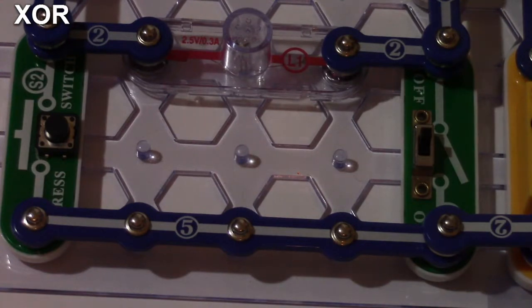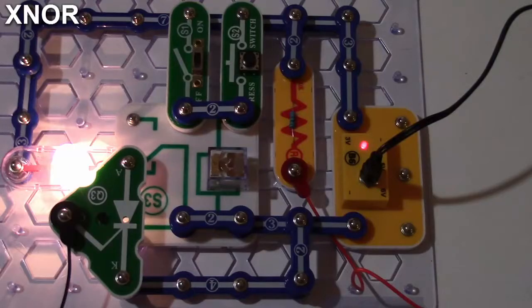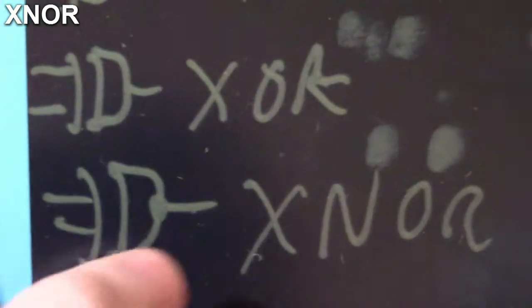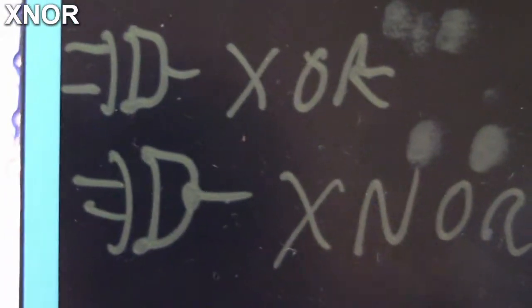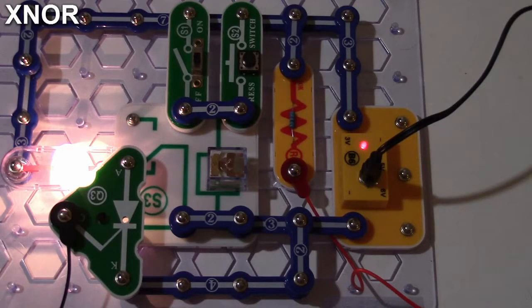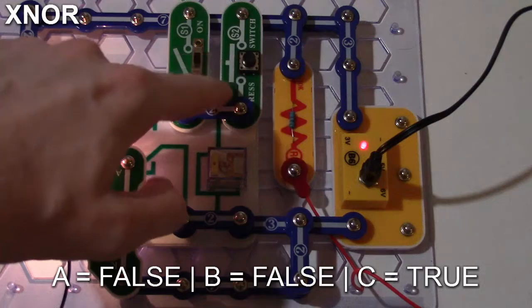That's how the exclusive OR works — either one can be true but not both. Now let's set up the exclusive NOR, or XNOR. The XNOR circuit is a crude approximation using the available snap circuit parts. The XNOR symbol looks like the exclusive OR but with a negation circle, so the output is the opposite of XOR.